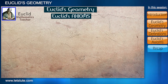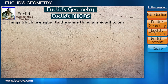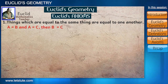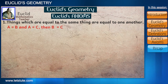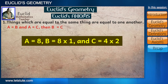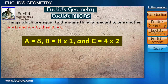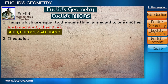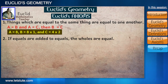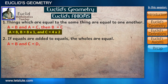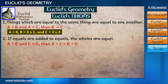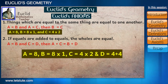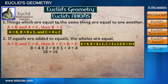Let's look at some of Euclid's axioms. The first axiom says: things which are equal to the same thing are equal to one another. It means if a equals b and a equals c, then b is also equal to c. The second axiom says: if equals are added to equals, the wholes are equal. That is, if a equals b and c equals d, then a plus c equals b plus d. For example, assigning values such as 4 plus 4, if we substitute all the values, we can see that a plus c equals b plus d.